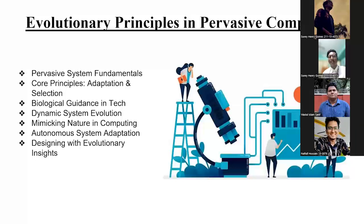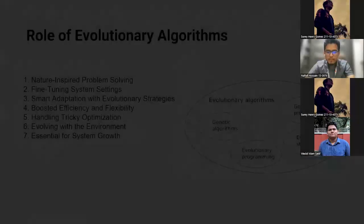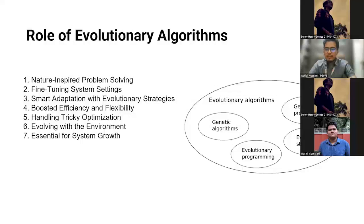So this was all about my part of the presentation. Now my teammate will discuss further. Assalamu alaikum sir, my name is Nafir Hosin and my ID is 2111539 76. Now I am going to present to you about the role of evolutionary algorithms. Evolutionary algorithms are very effective in optimizing pervasive computing systems. These algorithms imitate evolutionary principles to solve complex problems and optimize system parameters. Genetic algorithms, for example, imitate natural selection employing techniques such as crossover and mutation to find optimal solutions.